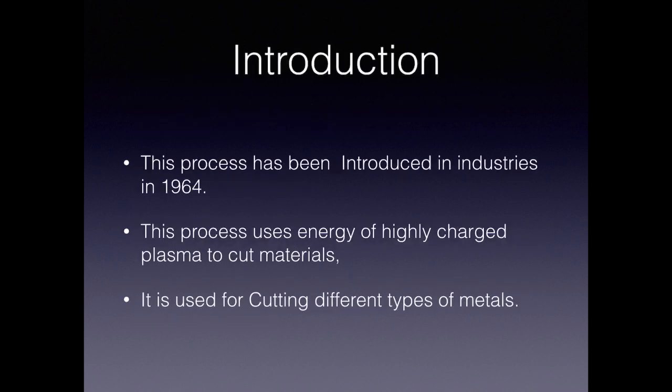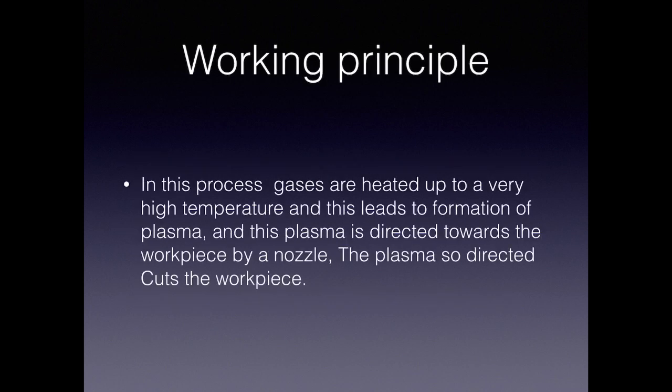Introduction: this process was introduced into industry in the year 1964. The high energy of charged plasma is used to cut metals, and it is used for cutting different types of metals. Almost any type of metal which conducts electricity can be cut using this process.